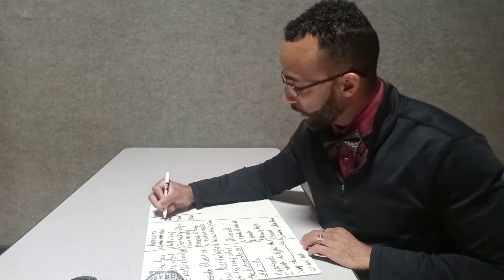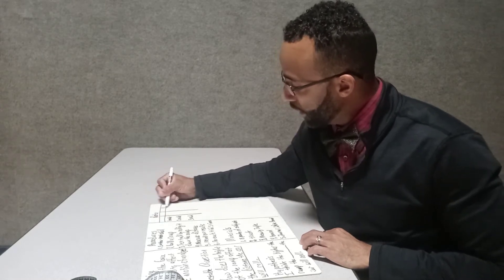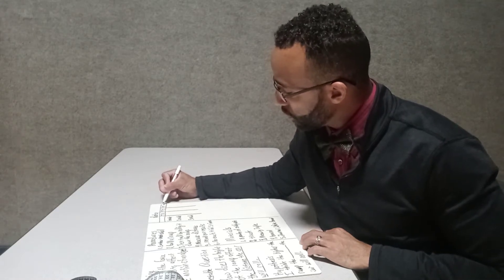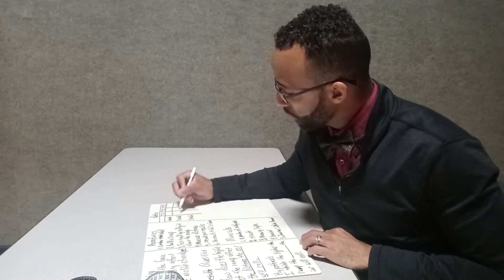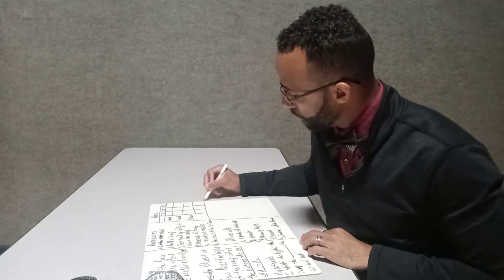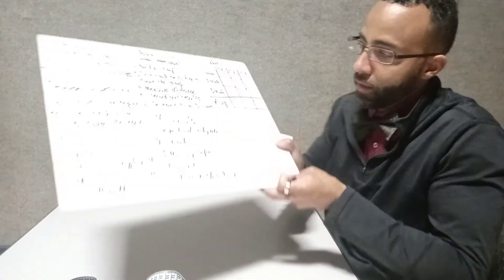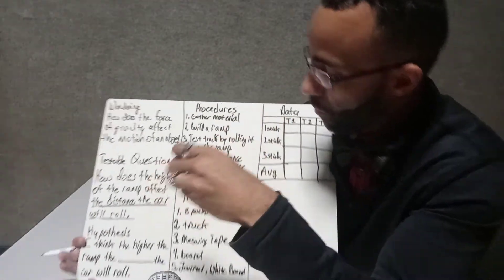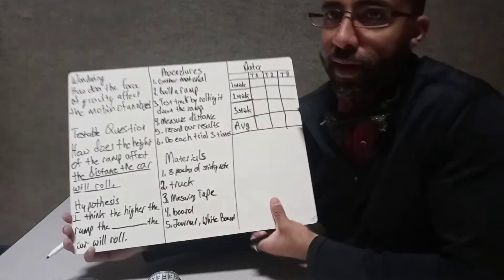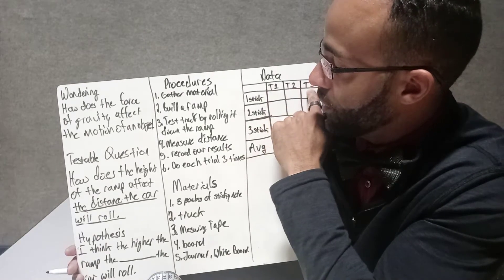How many trials are we going to have? Every time you do an investigation, you need at least three trials. So we'll try trial one, trial two, trial three. We're going to test one sticky and test it three times, putting the results every time.